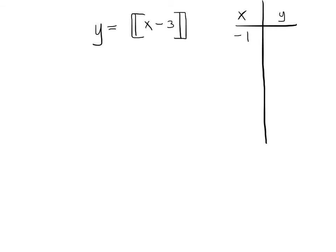So when x is negative 1, y is going to be negative 4. I'm always starting on the integers because those are always easy. There's nothing tricky happening on the integers.